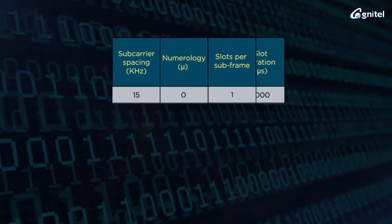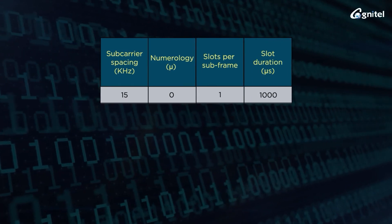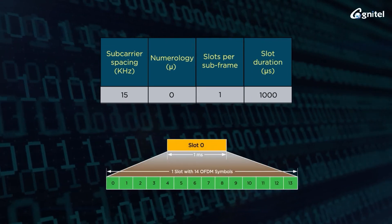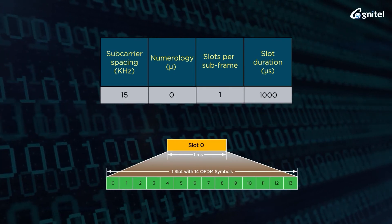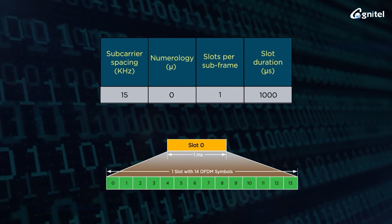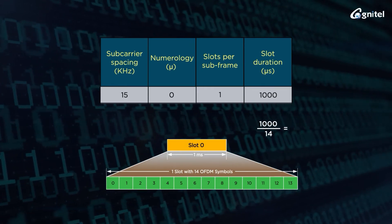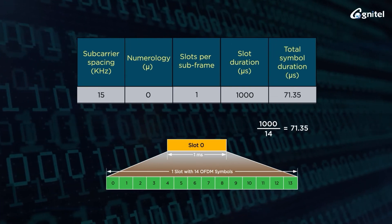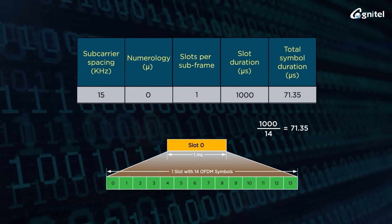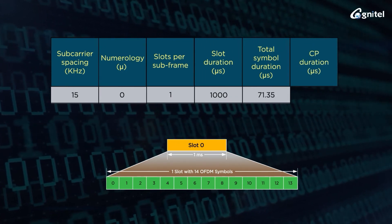As each slot has 14 OFDM symbols, the total symbol duration is calculated by dividing 1000 by 14, which is equal to approximately 71.35 microseconds. In this symbol, the cyclic prefix duration is approximately 4.69 microseconds, and the OFDM symbol duration is approximately 66.67 microseconds.